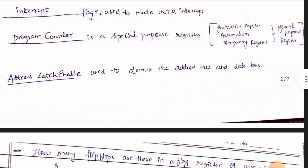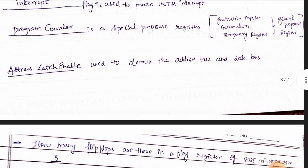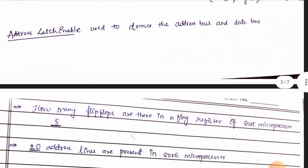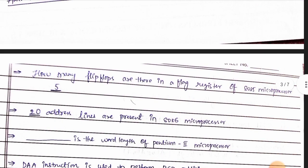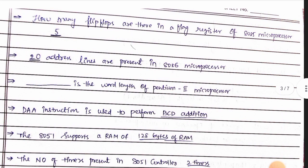If you want to check the address, use the address and data. Also, how many flip-flops are there in the flag register of the 8085 microprocessor? The answer is 5.